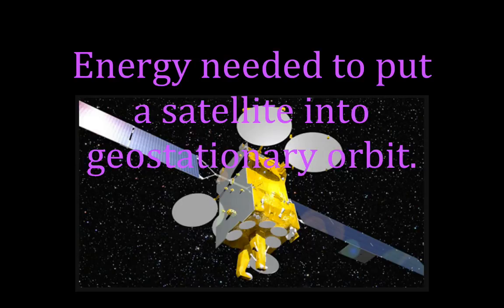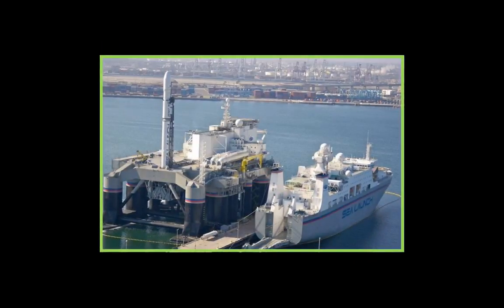In today's video we are going to go over the energy needed to put this telecommunication satellite into geostationary orbit above the Earth. Before we do that, I just want to talk a minute about how that satellite was actually launched into space. It was launched by a company called Sea Launch, and they are called Sea Launch because they launch things from sea. This is their facility in Long Beach, California — here's the ship from which they monitor their sea launches, and here is the platform from which they launch.